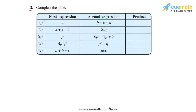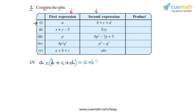In question 2 we have to complete a table with one column of expressions and a second column of expressions, and we have to multiply the two expressions in each row. In the first row, the first expression is a and the second expression is b plus c plus d. The first expression is a monomial and the second is a trinomial, so we apply the distributive law and write this as a into b, plus a into c, plus a into d, which gives a b plus a c plus a d.